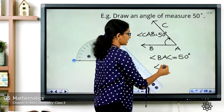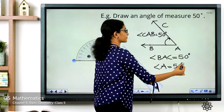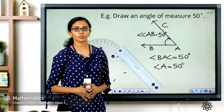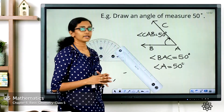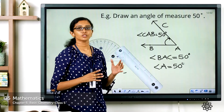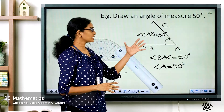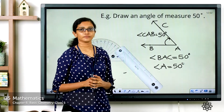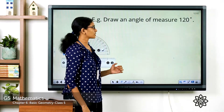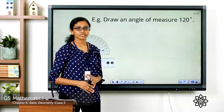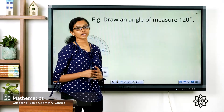I hope you are clear with how to use a protractor to draw an angle using both the inner scale and the outer scale. In this case we have seen how to draw an acute angle. Next, we will see how to draw an obtuse angle using the protractor. Here we have a question: draw an angle of measure 120 degrees.